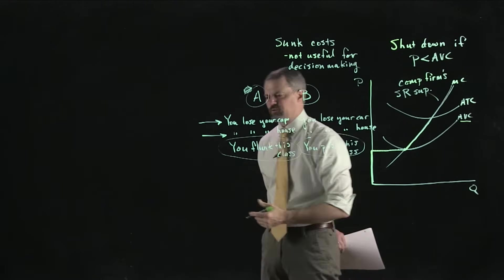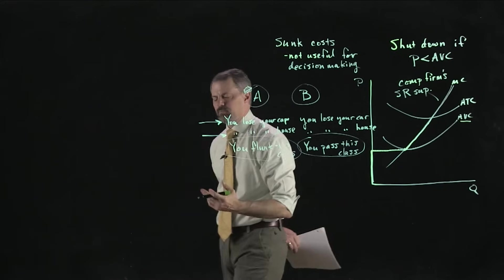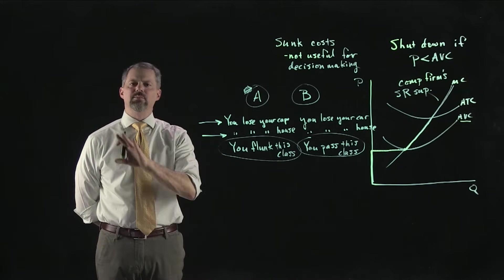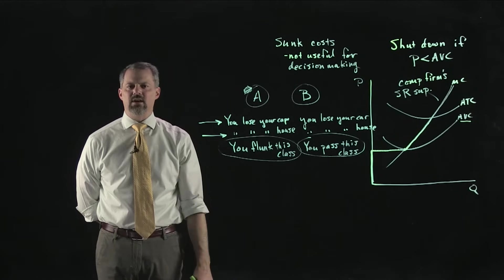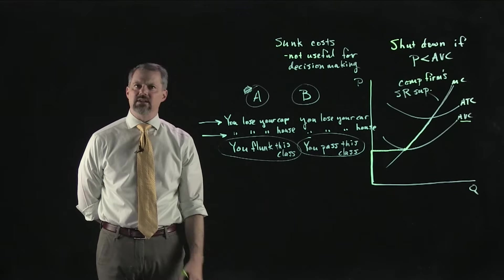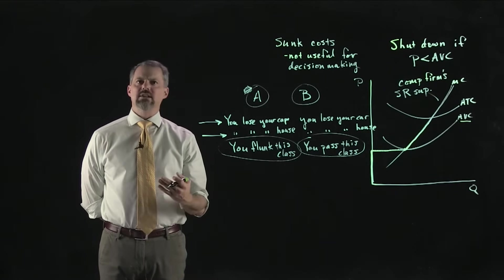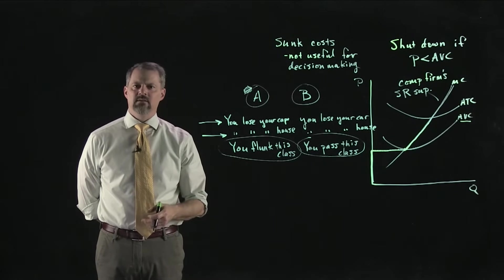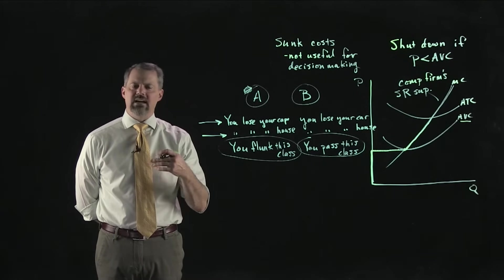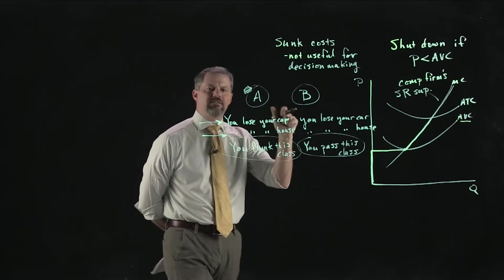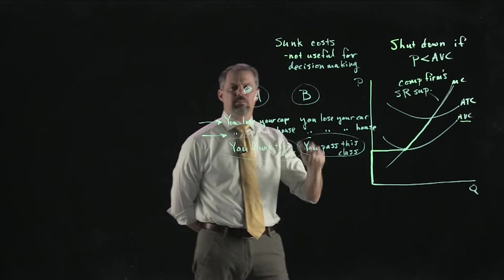I can put on a test: 'True or false — firms ignore their fixed costs when making production decisions.' Students often say 'false' because they think well-run firms shouldn't ignore anything. But the answer is true: firms ignore their fixed costs when making production decisions.